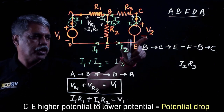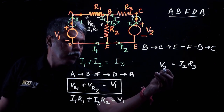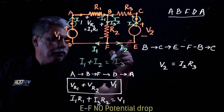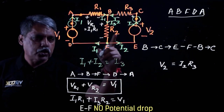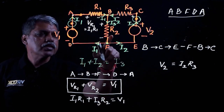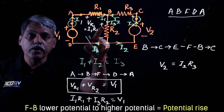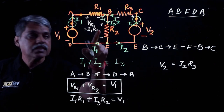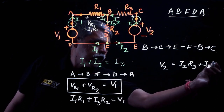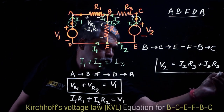Between C and E we have a voltage drop since we move from higher to lower potential through V2. Writing potential drops on one side and rises on the other: the drop is V2, and between E and F there is no drop. Moving from F to B through resistor R2 is from lower to higher potential, giving a voltage rise of I3·R2. So the KVL equation for the second loop is: I2·R3 + I3·R2 = V2.